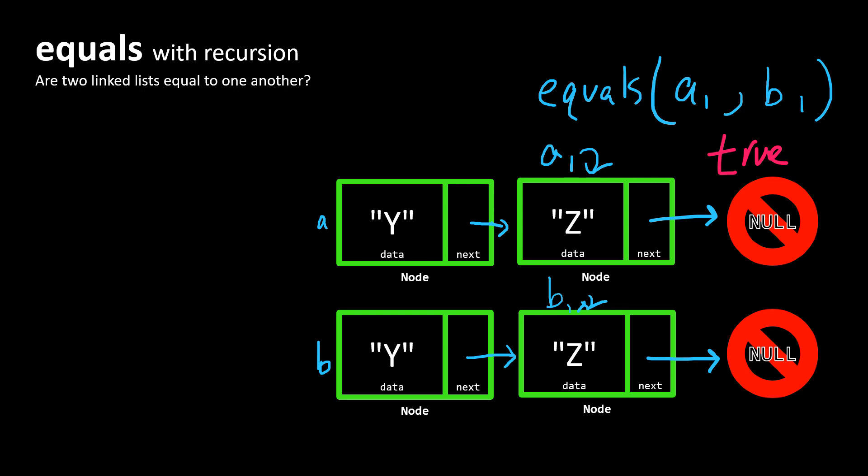All right. So now what we'll do is we will consider what has to happen in our recursive case. So our recursive case is when equals is called and a reference to A and B are given.